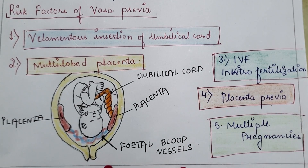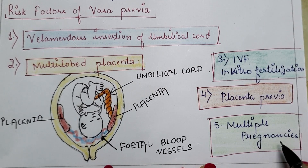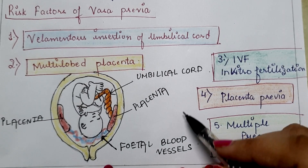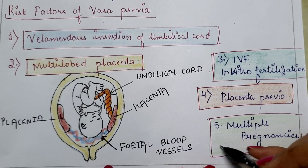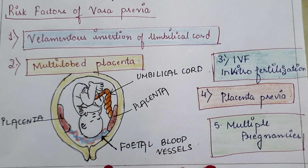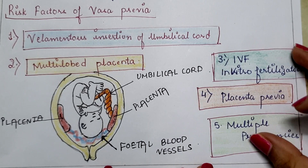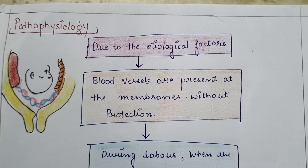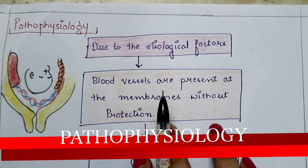Placenta previa — when the placenta is attached at the lower uterine segment — is another risk factor. Next is multiple pregnancies. In the case of twins, there are more chances because of the non-availability of space at the upper uterine segment; the placenta may attach at the lower segment or there are more chances of velamentous insertion of the umbilical cord, which may lead to vasa previa.